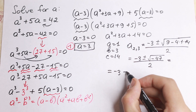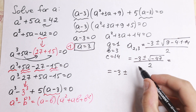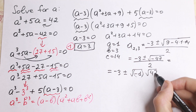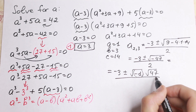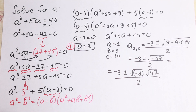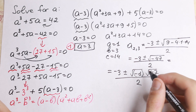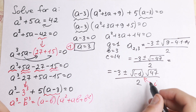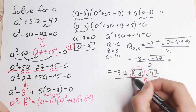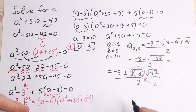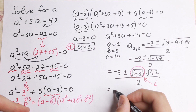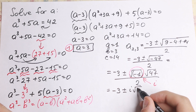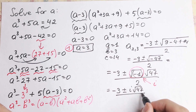Let's simplify this. We separate the square root of minus 47 as square root of minus 1 times square root of 47. Since the square root of minus 1 equals i, our result is minus 3 plus or minus i times square root of 47, all divided by 2.